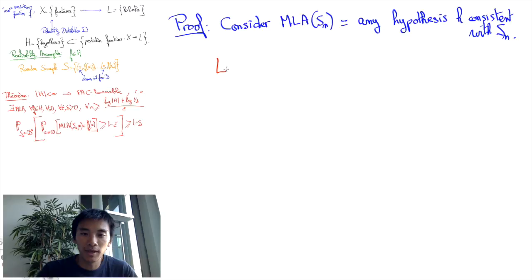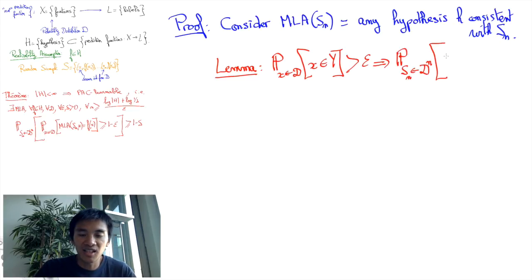This means that we shall begin with the following lemma. If Y is a subset of X of probability greater than epsilon, then it will be unlikely that Sn does not intersect Y, that Sn doesn't pick one of the elements of Y. So formally,